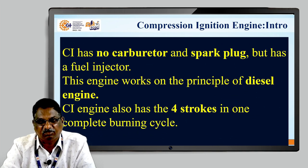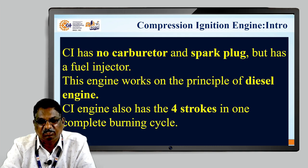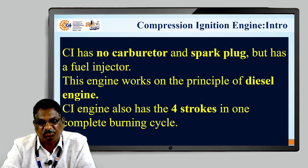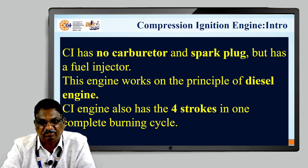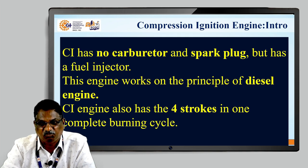This is the introduction of the compression ignition engine. In case of CI engine, it has no carburetor and no spark plug. This is the main feature — the speciality of CI engine. It does not require carburetor and spark plug, but it has a fuel injector. This is the important difference between SI engine and CI engine. This engine works on the principle of the diesel engine. CI engine also has four strokes in one complete burning cycle.